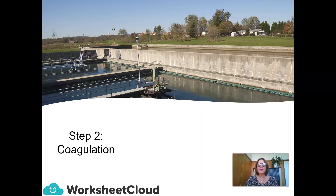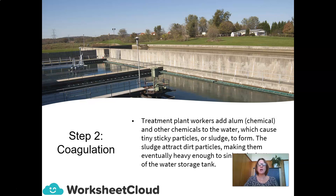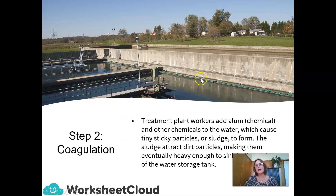Step two is coagulation. This is when the treatment plant workers add alum — a chemical — to the water. It causes tiny sticky particles or sludge to form. The sludge attracts dirt particles, making them eventually heavy enough to sink to the bottom of the water storage tank. It's similar to settling and decanting, but it's called coagulation. The special chemical alum makes all the dirty particles sink to the bottom and form a kind of sludge, also called flock.